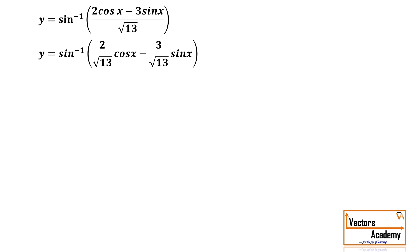Now the constant terms that is 2 by root 13 and 3 by root 13. We will try and square them and add them. What we will get is 1. Now the square of two terms is equal to 1. This is only possible when one of the value is of sin theta and the other is cos theta.